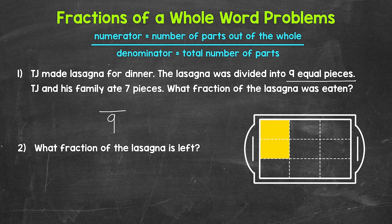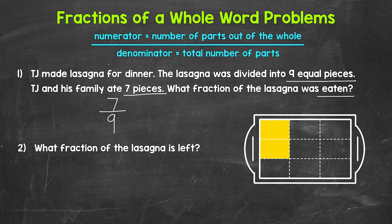Now we need the numerator. That's the number of parts out of the whole that we are interested in or focused on — the number of parts being talked about. Here we want the fraction of the lasagna that was eaten, so we need the number of pieces TJ and his family ate. That's seven. So seven is our numerator. Seven pieces out of the nine total pieces were eaten. Our fraction here: seven ninths. Seven ninths of the lasagna was eaten.